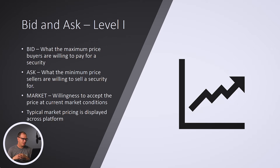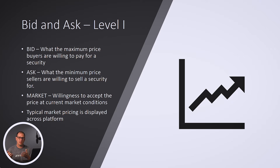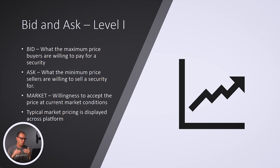Ask on the other side is what sellers are willing to sell the security for. Again, market price is $200, maybe somebody's willing to sell it at $201, and that's the price they're willing to sell. So you have bid on one side, you have ask on the other side, and then you have market right in the middle, which is the willingness to accept price at the market conditions — kind of right there in the middle, what the current price is.